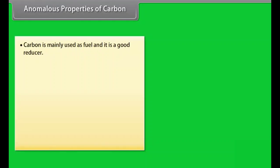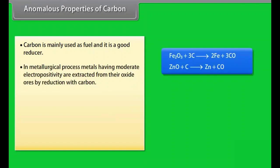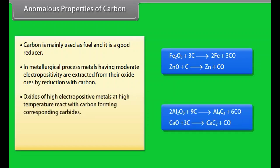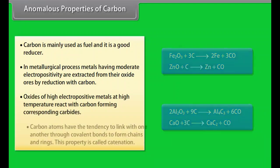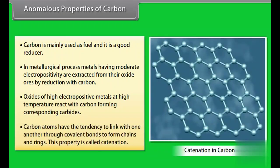Anomalous properties of carbon. Carbon is mainly used as fuel and it is a good reducer. In metallurgical process, metals having moderate electropositivity are extracted from their oxide ores by reduction with carbon. Oxides of high electropositive metals at high temperature react with carbon forming corresponding carbides. Carbon atoms have the tendency to link with one another through covalent bonds to form chains and rings. This property is called catenation.